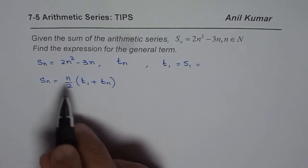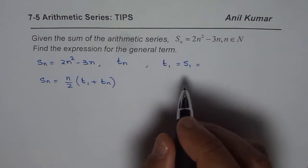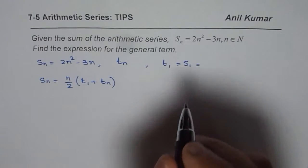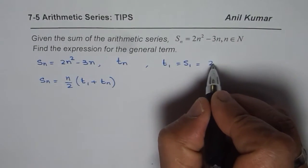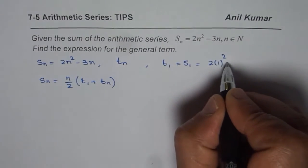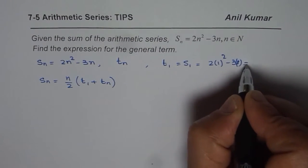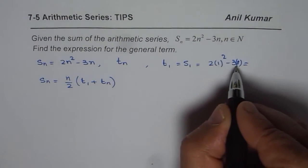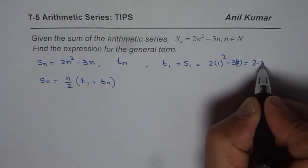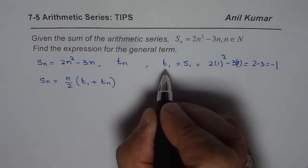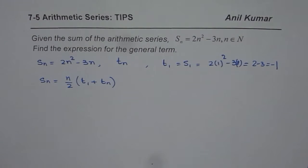So we can find t_1 by substituting 1 in S_n. If I write 1, I get 2 times 1² minus 3 times 1, which is 2 minus 3, which is minus 1. So the first term is minus 1 for us.